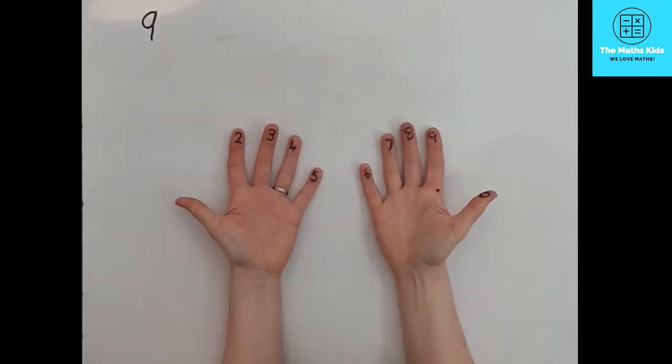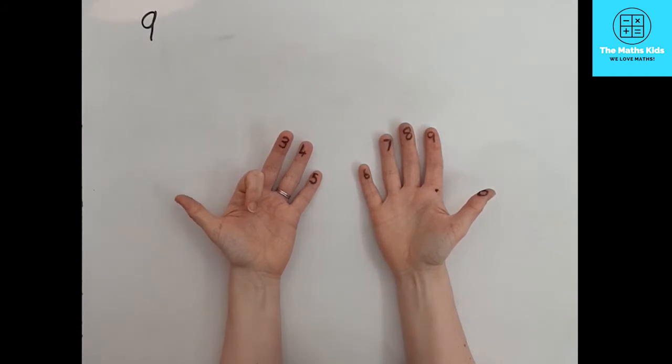If you want to work out 2x9, put down finger 2. There is 1 finger on the left hand side and 8 fingers altogether on the right hand side. So the answer to 2x9 is 18.